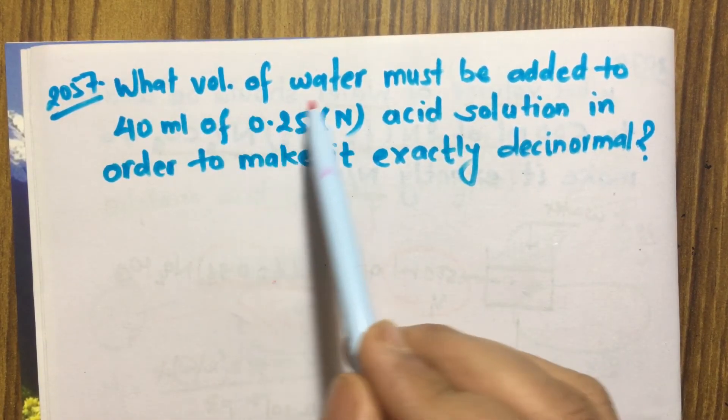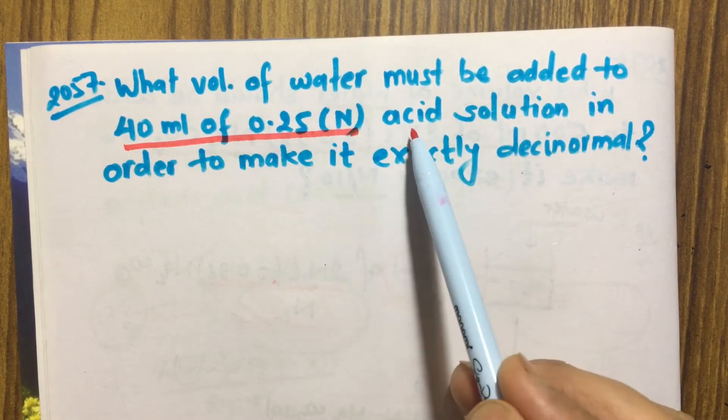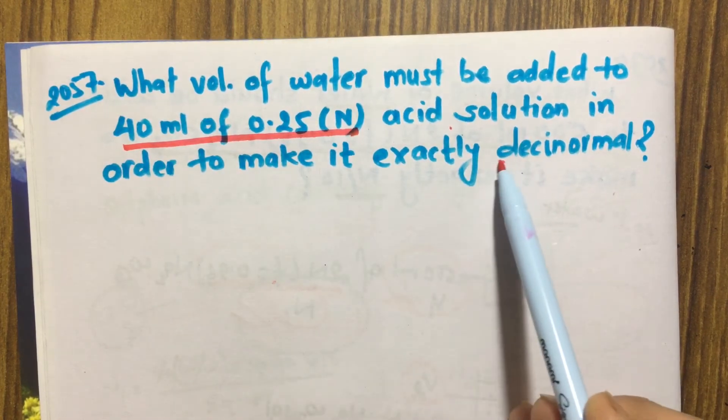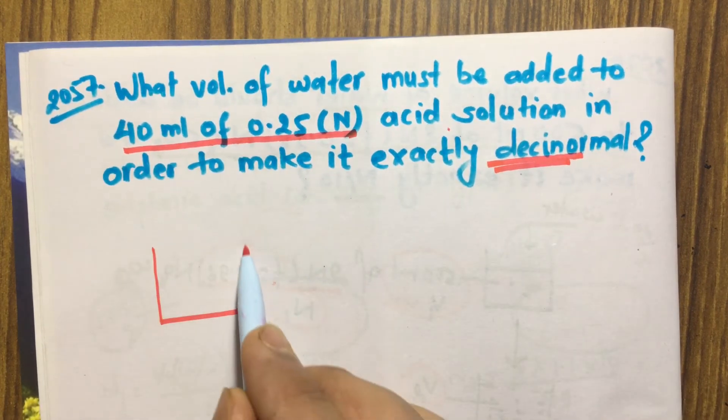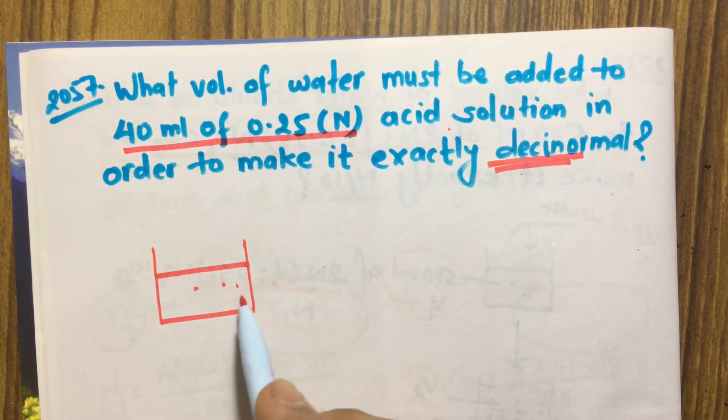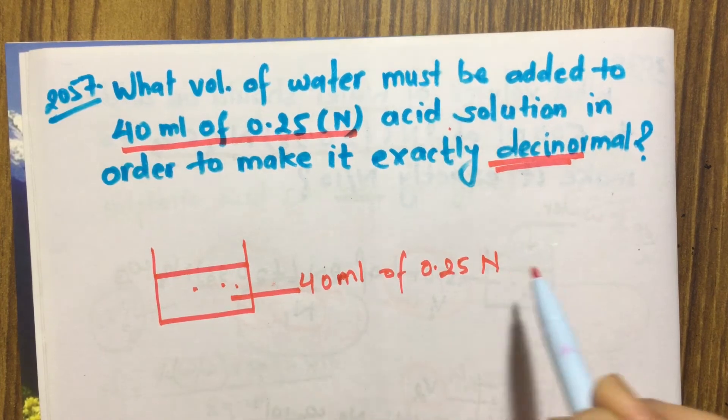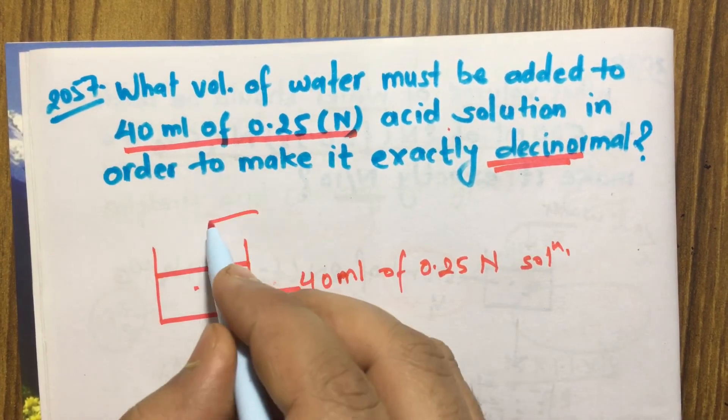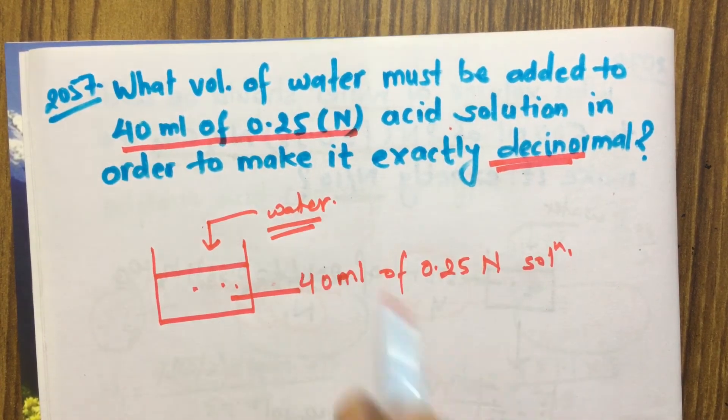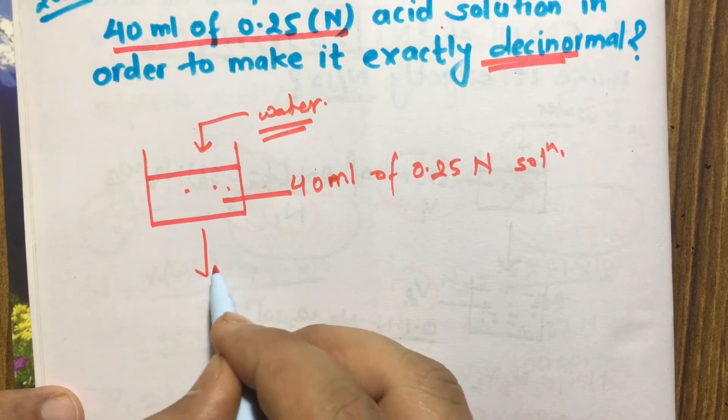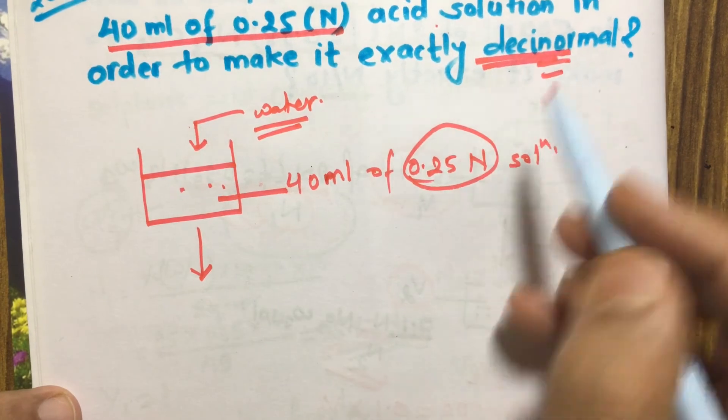What volume of water must be added to make 40 ml of 0.25 normal acid solution in order to make it exactly 0.1 normal solution? This is a similar type of question that we have done before. Initially its volume is 40 ml of 0.25 normal acid solution. What volume of water should be added such that this concentration becomes 0.1N?